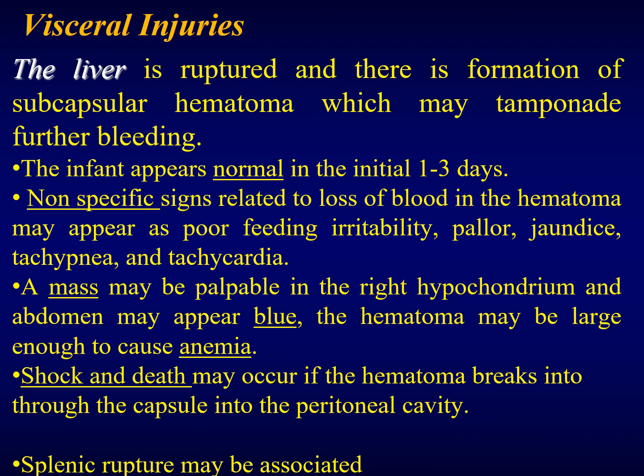Visceral injuries may also happen during birth. The liver may rupture, leading to all the complications of bleeding, like tamponade. The infant appears normal in the initial one to three days, then shows non-specific signs related to blood loss — poor feeding, irritability, pallor, jaundice due to hemolysis of the hematoma, and tachycardia. A mass may be found in the right hypochondrium, and sometimes the abdomen may appear blue. The hematoma may be large enough to cause anemia, shock, and death. Splenic rupture may also be associated with hepatic subcapsular hematomas.